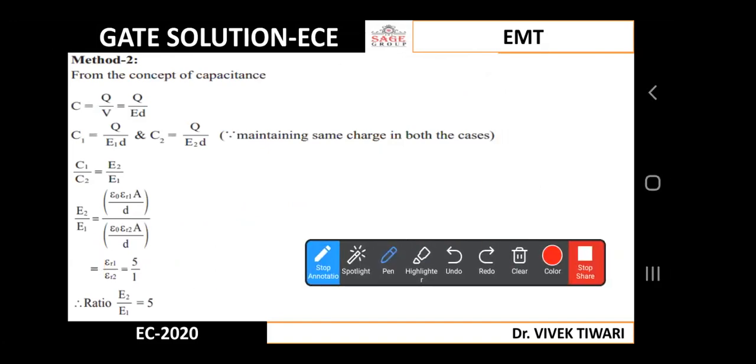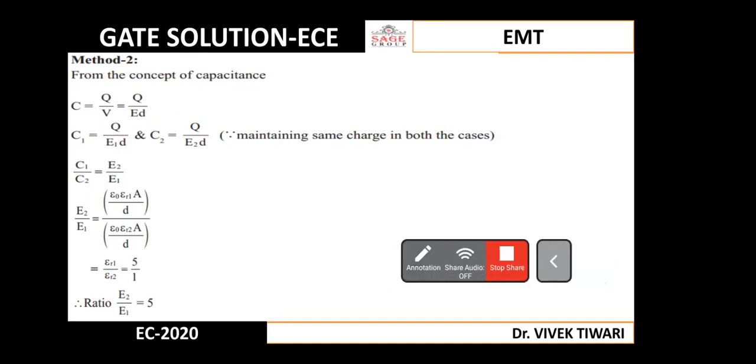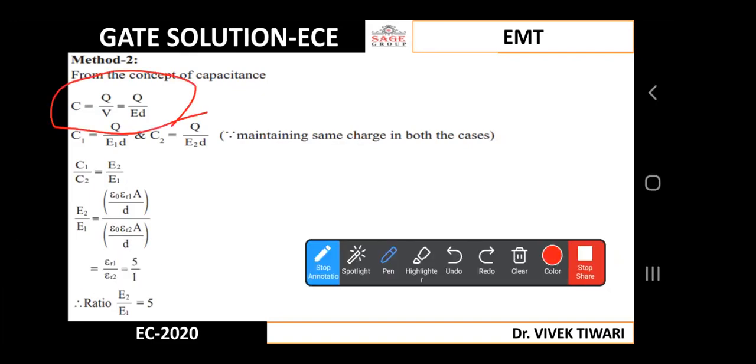We can solve this question by another alternative method. We know that C equals Q by V, and we can represent V by E into d. This is a very famous relation for capacitor Q and V. From here we can write C1 equals Q divided by E1 into d. So C1 equals Q divided by E1 d, and C2 equals Q divided by E2 d.